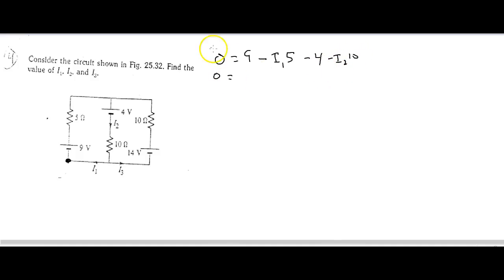And then I've got minus, I've got an I2 times 10. Clean this up. I get 0. This is left-hand loop. I get 5 minus 5 I1s minus 10 I2s.